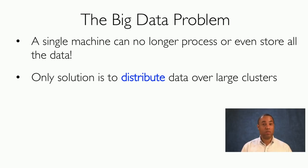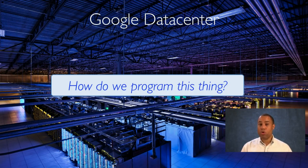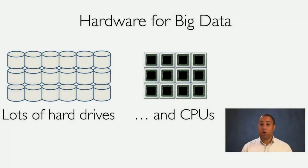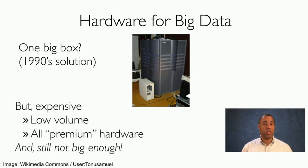The big data problem means that a single machine can no longer process or even hold all of the data we want to analyze. The only solution is to distribute the data over large clusters — for example, one of Google's data centers that contains tens of thousands of machines. One hardware approach is to put everything in one big box, which was used in the 1990s, but it was very expensive, produced in very low volume, considered premium hardware, and for today's big data these machines are not big enough.